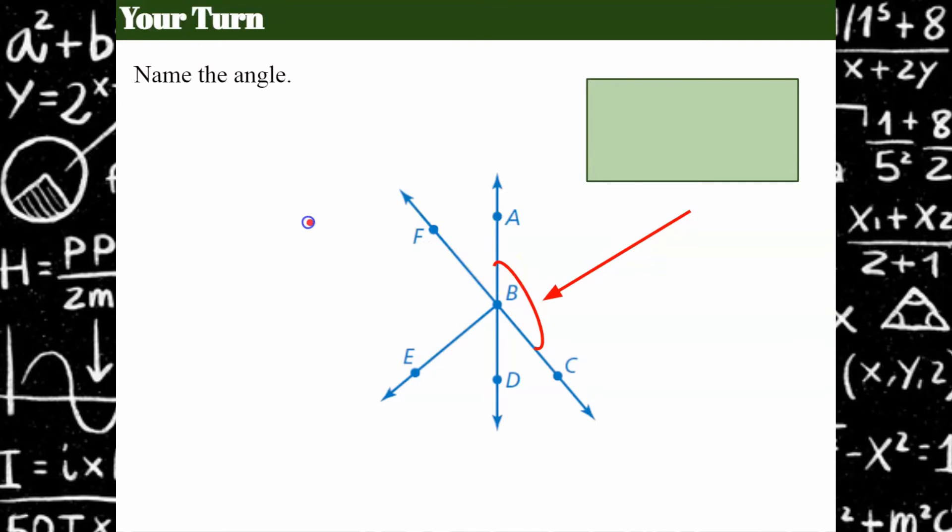Welcome back. Let's see how you did. So hopefully again, you remembered your angle symbol. Let's start here. A to B to C or start at C, B, A. How'd you do?